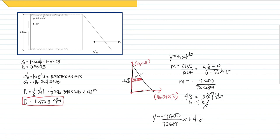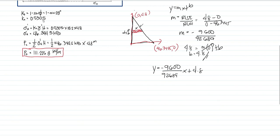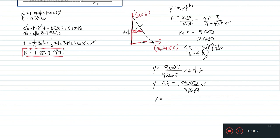So now, let's arrange the equation in terms of y. So that will be y minus 4.8 is equal to negative 9,600 over 92,689. So dividing both sides by negative 9,600 over 92,689. So our x now will be equivalent to a value negative 92,689 times y minus 4.8 divided by 9,600. So this is now what we'll use for the area of the differential strip and this is what we'll use to get the area of the pressure diagram.